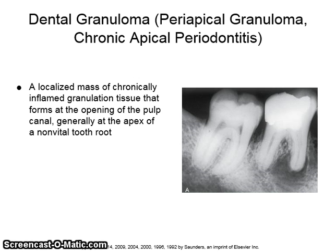A dental granuloma, or periapical granuloma, also called chronic apical periodontitis, is a localized mass of chronically inflamed granulation tissue that forms at the opening of the pulp canal, generally at the apex of a non-vital root.